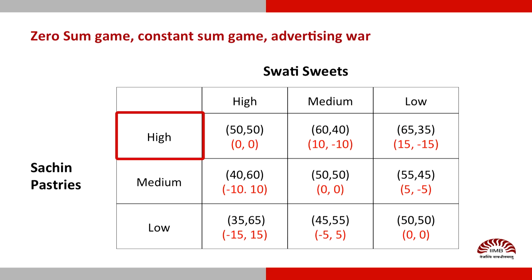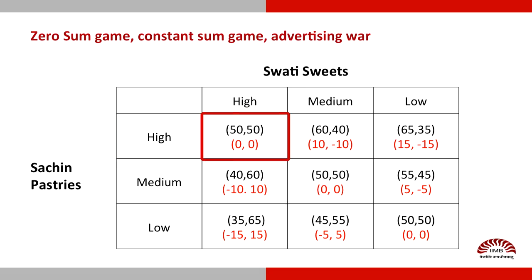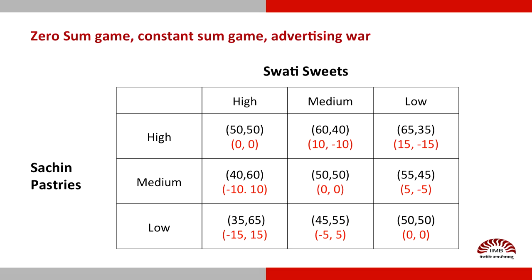What should Swathi do? By now you should have realized that Swathi should also choose a high level of advertising. The unfortunate part is nobody gets extra market share — it remains at 50-50. If somehow they could have both refrained and chosen low levels of advertising, they would have maintained the same market share. All they have managed to do is spend money on advertising without getting anything in return.